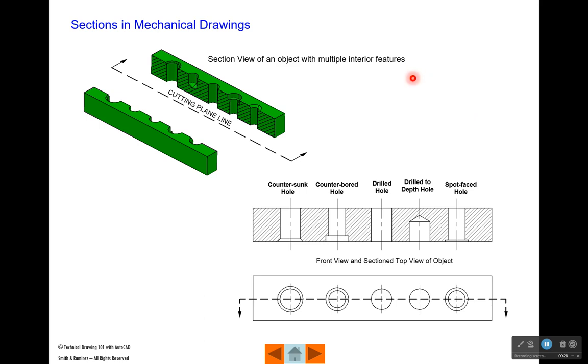Here's an example of a section view of a mechanical part. This part has five holes in it, all different types. If we imagine that we could cut through the center of that and pull the halves apart, we could see what's going on on the interior of the part, and those wouldn't be hidden lines.